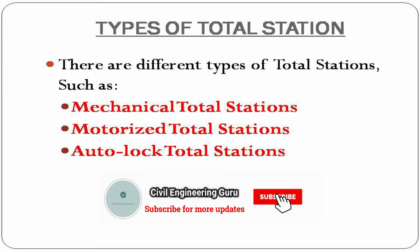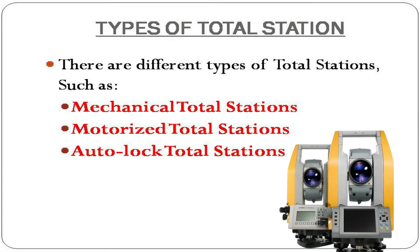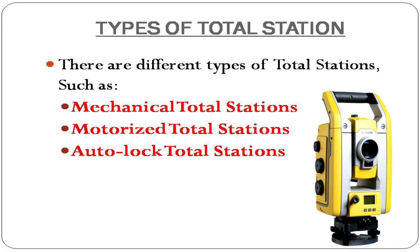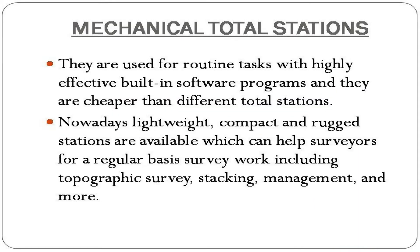There are different types of Total Station, such as Mechanical Total Stations, Motorized Total Stations, and Autolock Total Stations. Mechanical Total Stations are used for routine tasks with highly effective built-in software programs, and they are cheaper than other Total Stations. Nowadays, lightweight, compact, and rugged stations are available, helping surveyors with regular survey work including topographic survey, staking, management, and more.